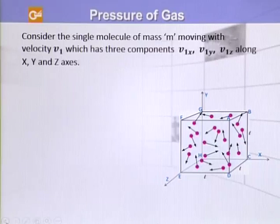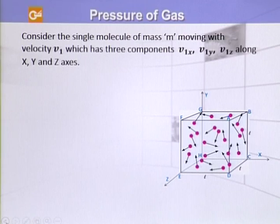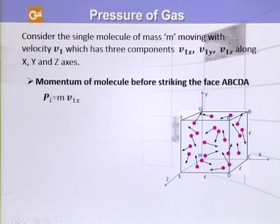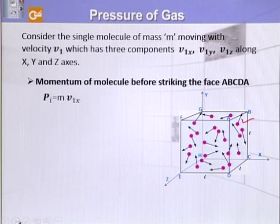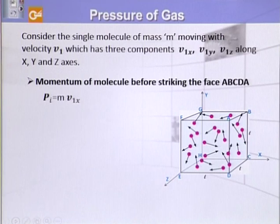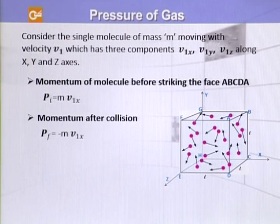Suppose there is a single molecule of mass M with velocity V1. Since it moves in three dimensions, it has three components: V1X, V1Y, and V1Z, along the X, Y, and Z axes respectively. Now we see what momentum it transfers to face ABCD. The momentum transferred to face ABCD is P_ABCD = −mV1X.